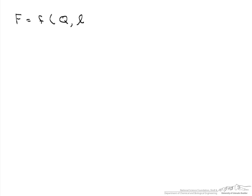We are going to use the idea of similitude and scaling using pi groups to determine ultimately the force on an object. We are told that the force on this object is a function of volumetric flow rate, length, density, and gravity. From that, we are asked to find our dimensionless pi groups.